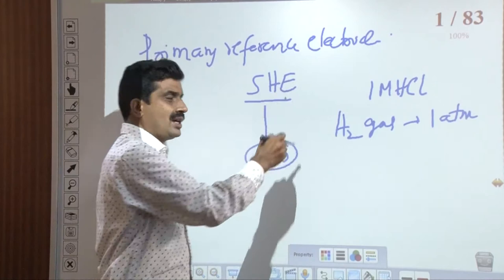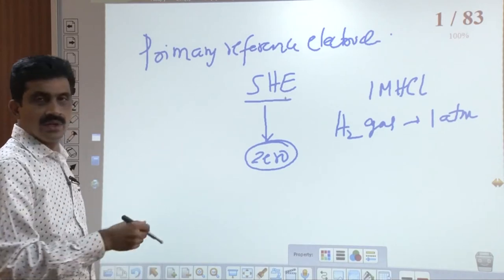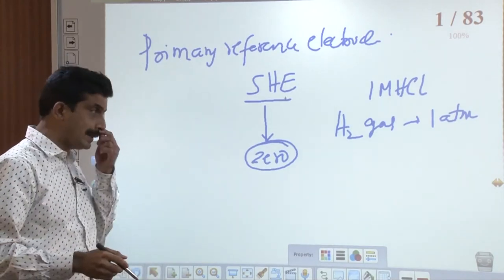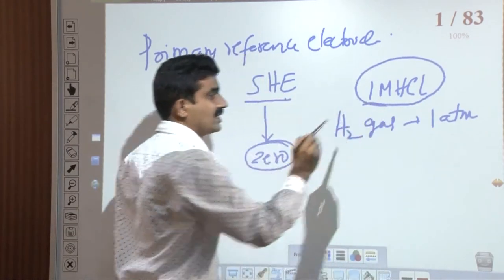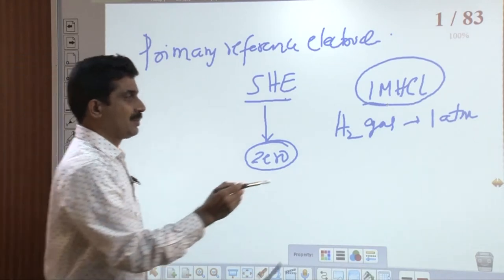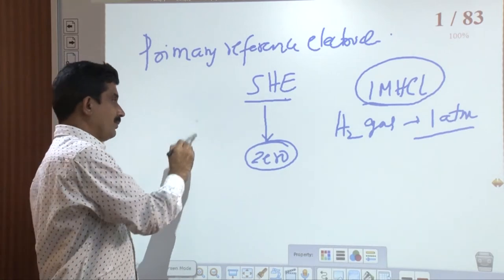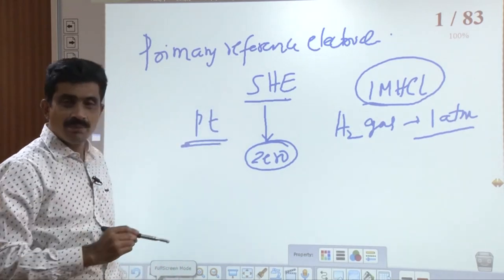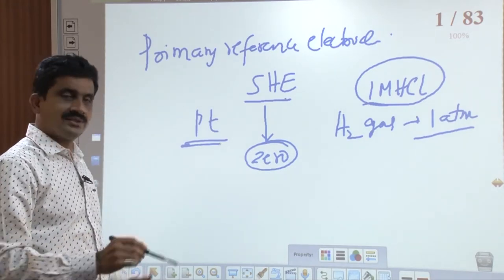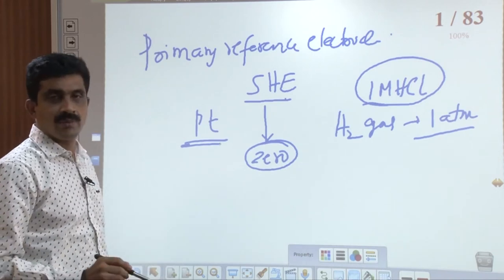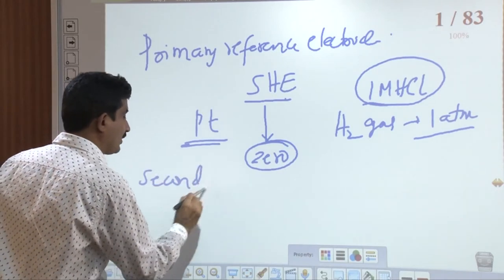There are certain advantages to the SHE, but there are also limitations. The construction and maintenance are difficult — it is hard to maintain a concentration of 1 molar HCl and also difficult to maintain a pressure of 1 atmosphere. Additionally, the platinum electrode gets easily poisoned. Due to these limitations, certain other electrodes are employed as reference electrodes, and they are called secondary reference electrodes.